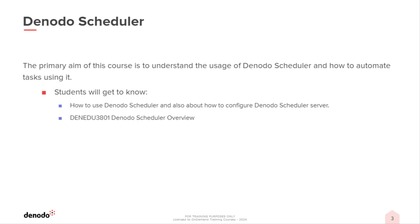The primary goal of this course is to help students understand the usage of the Denodo Scheduler and its components, and we will also see how it can be used for automating tasks. In the first module, Denodo Scheduler Overview, students will get to know about Denodo Scheduler, its features, and architecture. We will also have a demo explaining various components in Scheduler and the configuration options.